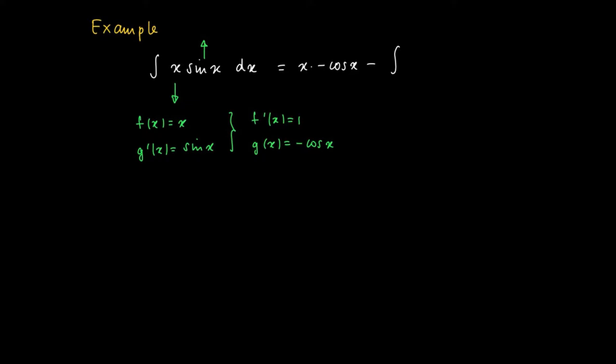We get f times g equals x times minus the cosine of x minus the remainder, the remaining integral, where we differentiate f and take a primitive of g'. So this is 1 times minus cosine x dx.